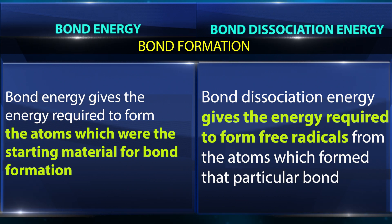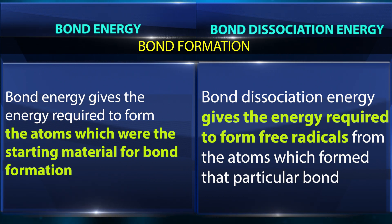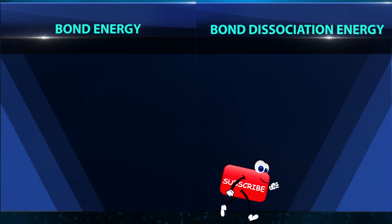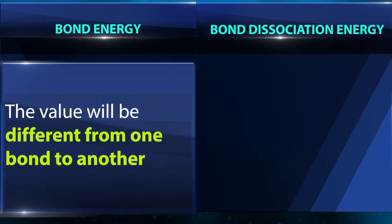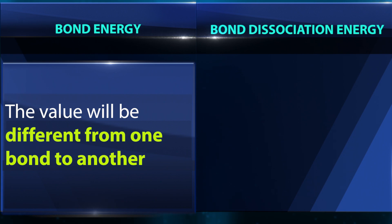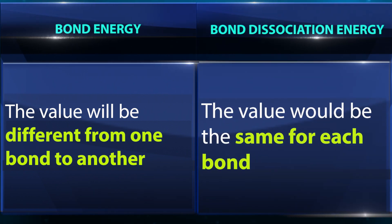Bond dissociation energy gives the energy required to form free radicals from the atom which formed that particular bond. For bond energy, the value will be different from one bond to another, whereas for bond dissociation energy, the value would be the same for each bond.